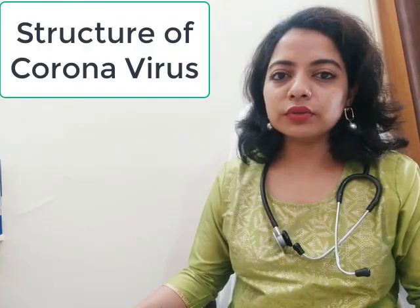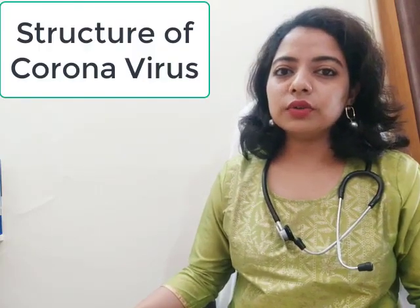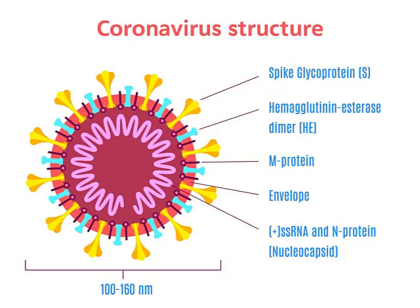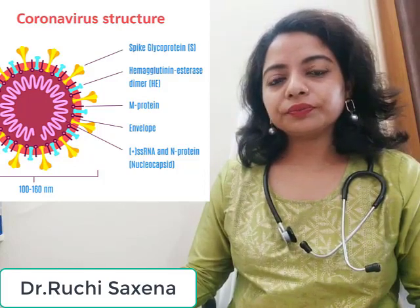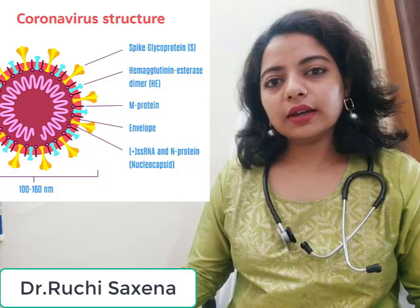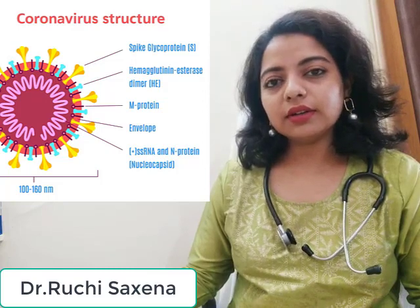The structure of the coronavirus is spherical. It has spike proteins on its surface, and those spikes have glycoproteins on them. Its diameter varies from 50 to 200 nanometers, making it relatively large in size. It is a single-stranded RNA structure.